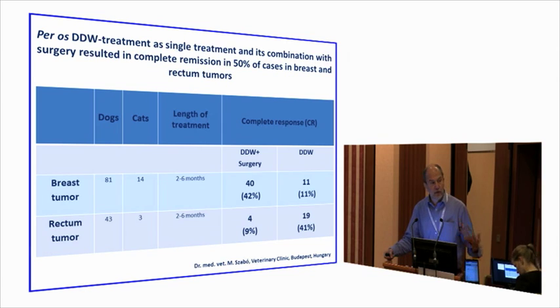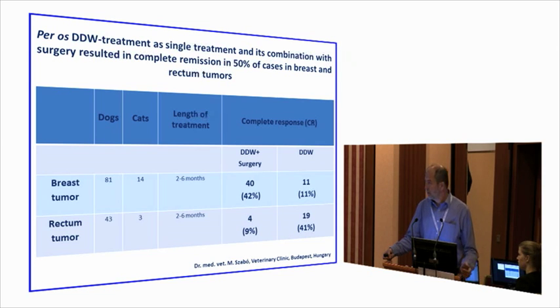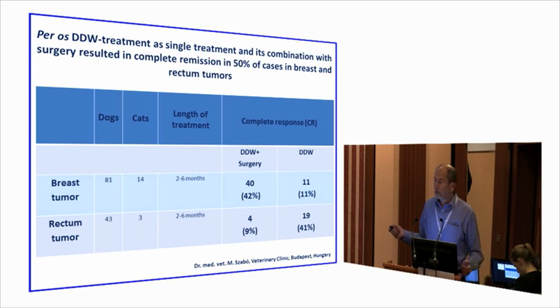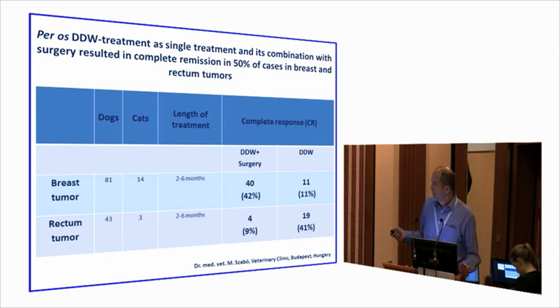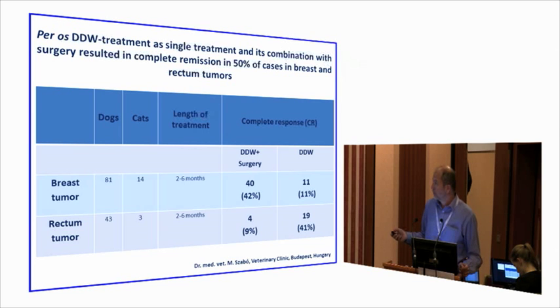At the very beginning of our study, we asked vets to use deuterium-depleted water to treat dogs and cats. We have a drug registered for veterinary use. With deuterium-depleted water — either alone or in combination with surgery — roughly 50% of animals can be cured, and an additional 20–30% show partial response.